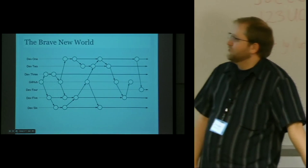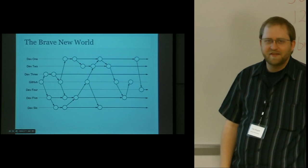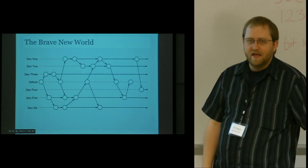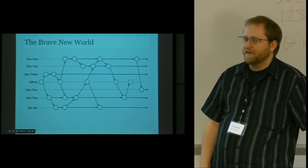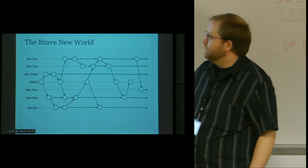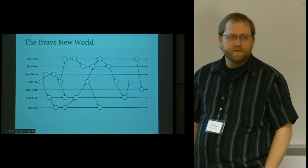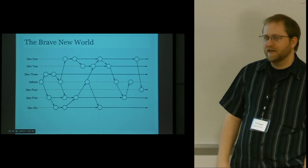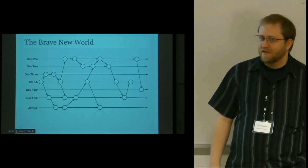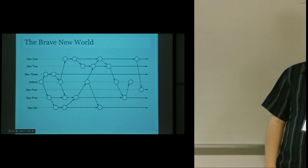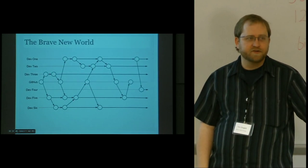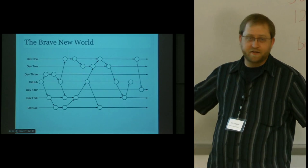Nowadays we have the brave new world of distributed source control. I've never actually seen anything as complicated as this, but this particular model is entirely possible — people being able to commit, push and pull code back and forth from each other from a centralized repository. A lot of us probably use GitHub as a central repository, but when it comes to Git, that's really kind of an artificial construct, the idea of having a centralized server. For those of us who have been using Git with large teams — teams spread over various offices or even various states or countries — we can recognize that we do run into situations like this sometimes.